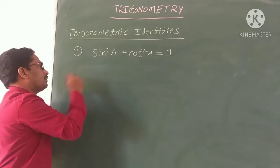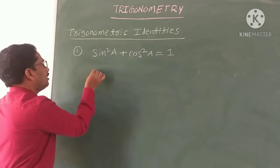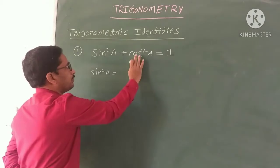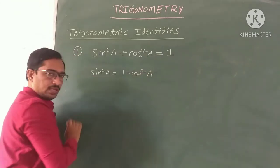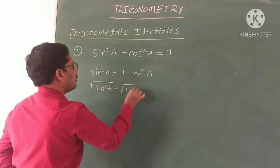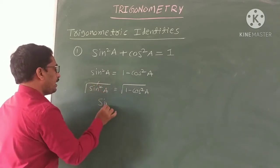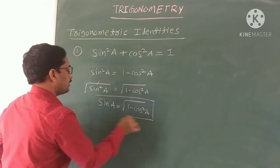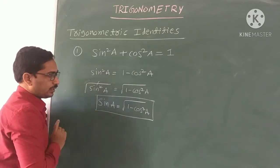From the first identity we can express sin in terms of cos and cos in terms of sin. Transposing cos²A to the right side: sin²A = 1 - cos²A. Now applying square root on both sides: sin A = √(1 - cos²A). So sin expressed in terms of cos, derived from identity 1.